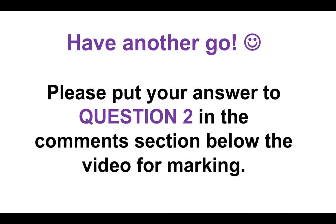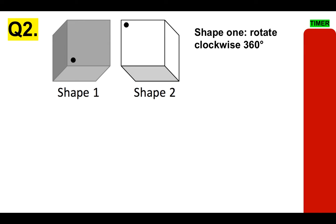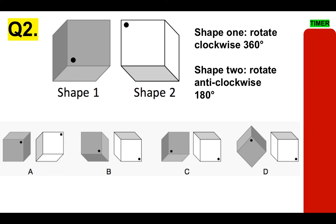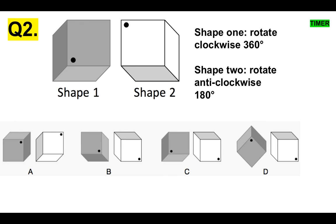Let's move on — have another go. Please put your answer to question 2 in the comments section below for marking. You've got SHAPE 1 in that position and SHAPE 2 in that one. Rotate SHAPE 1 clockwise 360 degrees, and SHAPE 2 anti-clockwise 180 degrees — a little bit tougher. Is it A, B, C or D? Put your answer in the comments section below for marking. If you are getting those answers done in 10 seconds, you're doing brilliantly.